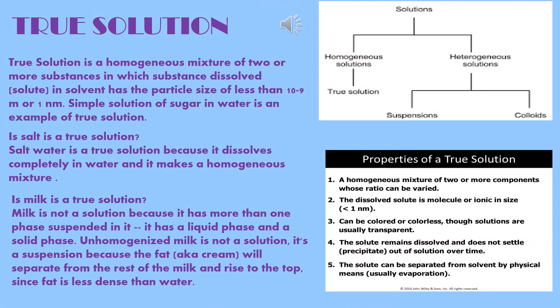Now I am starting the divisions of solutions. Solutions are divided into two main parts: homogeneous solutions and heterogeneous solutions. Homogeneous solution is a true solution. Heterogeneous solutions have two subdivisions: suspensions and colloids. A true solution is a homogeneous mixture of two or more substances in which the dissolved solute has a particle size of less than 10⁻⁹ meter, or 1 nanometer.